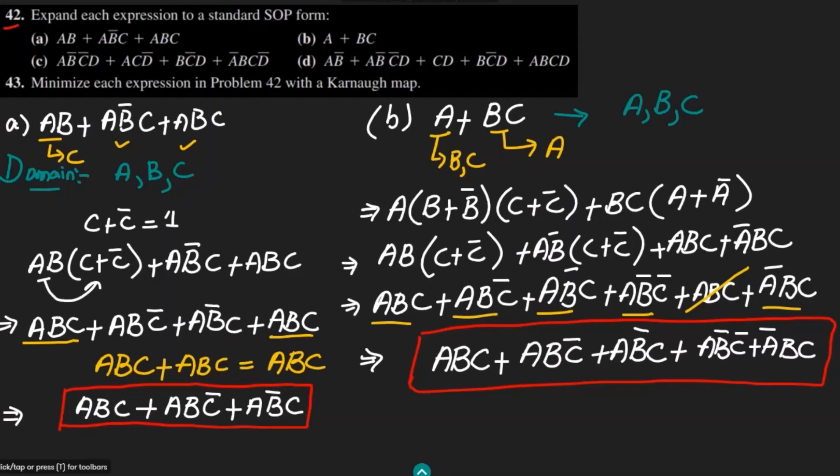Welcome back guys. This is question 42, and previously we have seen that we solved part A and part B of our question, and here we have seen the standard SOP forms for these parts. Today we are going to solve question 43 for part A and part B, and we have to see how to minimize each expression here by using the Karnaugh map.